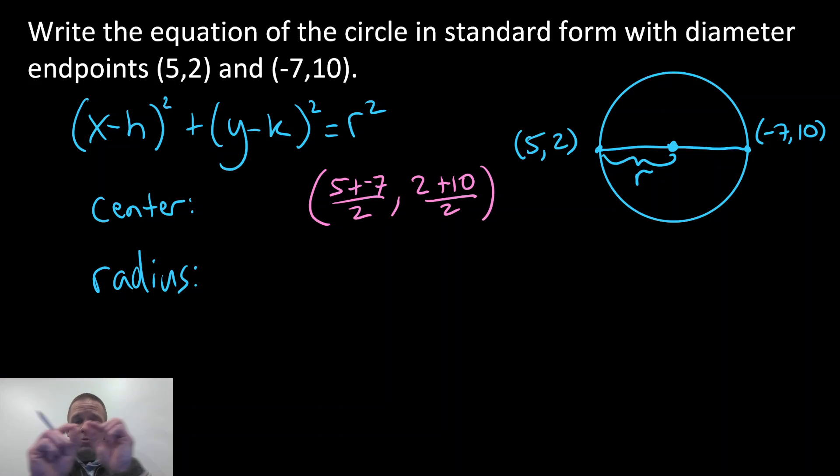And you could have switched your x's and y's around, because it's addition, which is commutative, but I always make sure that if I'm going from the first ordered pair, the (5,2), I'm gonna start with that one for both my x's and my y's.